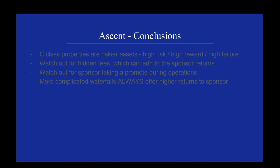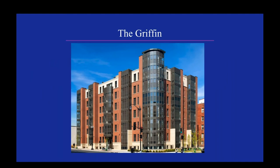To conclude on the Atlanta deal: C-class properties are riskier assets — high risk, high reward, but also a high chance of failure. Even in the current economic environment, that type of property is probably suffering more than a B or A class property. Watch out for hidden fees that add to sponsor returns, and watch out for a sponsor taking a promote during operations — that's not standard. Also, when you have a very complicated waterfall, it always offers a higher return to the sponsor. If you don't understand it, that's likely because the sponsor is getting more money.